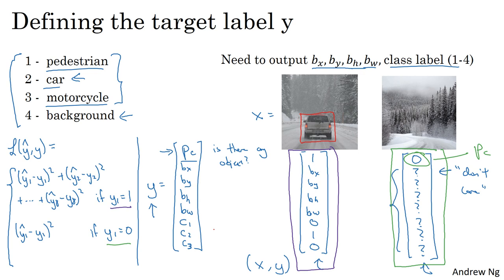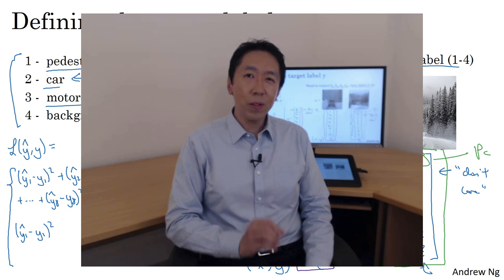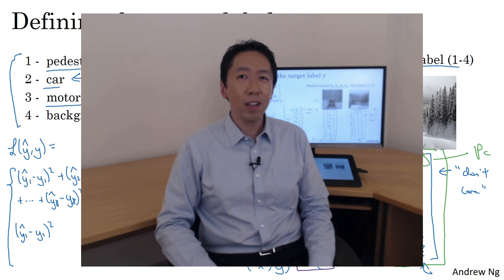As a side comment, I've used squared error to simplify the description. In practice, you could use a log-likelihood loss for C1, C2, C3 from the softmax output, squared error or something similar for the bounding box coordinates, and something like logistic regression loss for PC — though even squared error will probably work okay. That's how you get a neural network to not just classify an object but also localize it. The idea of having a neural network output a set of real numbers to tell you where things are in a picture turns out to be very powerful, and in the next video I'll share other places where this idea — almost as a regression task — can be powerful in computer vision as well.